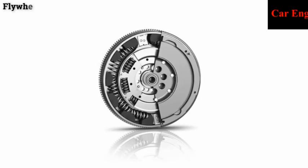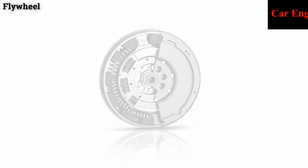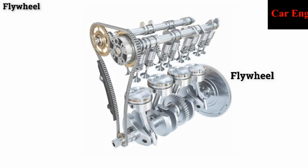The flywheel is used in the transmission system of a vehicle. A flywheel is a heavy steel wheel attached to the rear end of the crankshaft. The size of the flywheel depends upon the number of cylinders and the construction of the engine. The inertia of the flywheel tends to keep the crankshaft running at a constant speed.